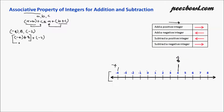So the result of minus four plus eight is four. Now with four, we are adding minus two. As we are adding a negative integer, we need to move left on the number line. From four, we move two units left — one and two — and we reach at two.